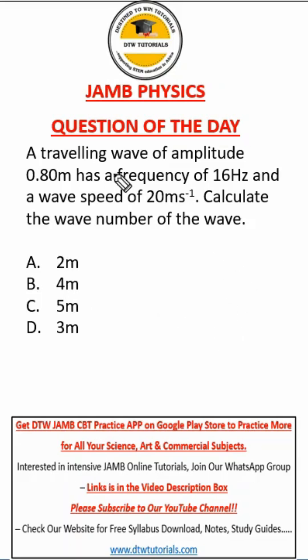Okay, we have a JAMB physics question here. It says a traveling wave of amplitude 0.80m has a frequency of 16 hertz and a wave speed of 20 meters per second. It asks to calculate the wave number of the wave.